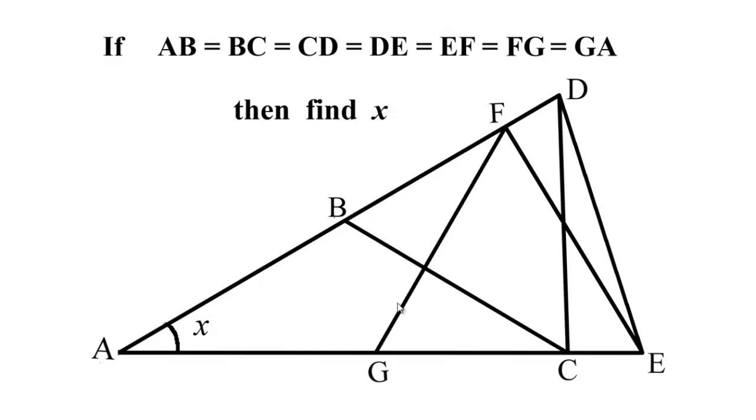The problem is pretty simple. If AB equal to side BC equal to CD equal to DE equal to EF equals to FG equals to GA, then what will be the value of angle x, angle BAG?